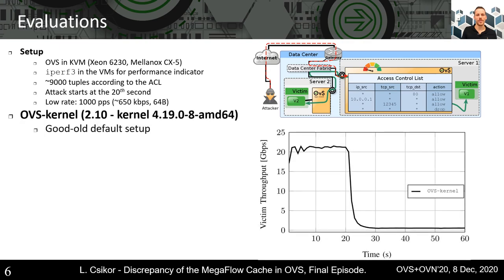Let's see first the case of OVS kernel. This is a setup we also evaluated previously; the only difference is that OVS here is more up-to-date. We observed nothing new here — as soon as the attack starts and the MFC becomes populated, the throughput quickly drops down to zero.